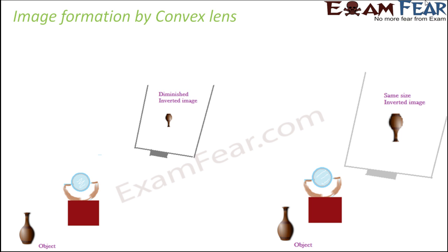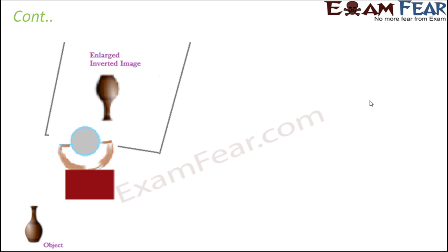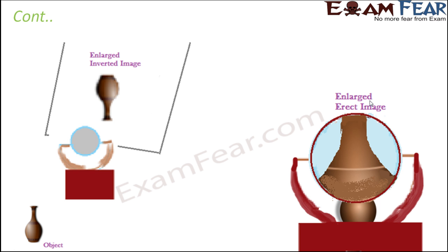As you bring the object nearer to the mirror, what happens? The size of the image keeps increasing. However, the image is still inverted. Now when you bring the object more near to the mirror, the image becomes all the more enlarged. And finally, when the object is very close to the mirror, you actually get to see a highly enlarged image. But in this case, it is also erect.